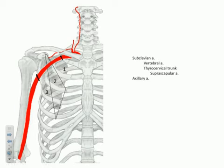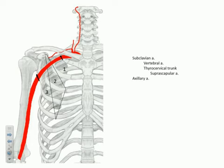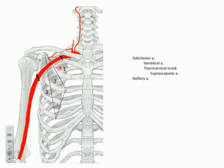The first segment is the region between the first rib and the medial border of pectoralis minor. The second section lies deep to pectoralis minor. The third section travels lateral to the lateral border of pectoralis minor and continues down to the lateral border of the scapula. We divide it this way because each segment has a corresponding number of branches: one branch off segment one, two branches off segment two, and three branches off segment three.